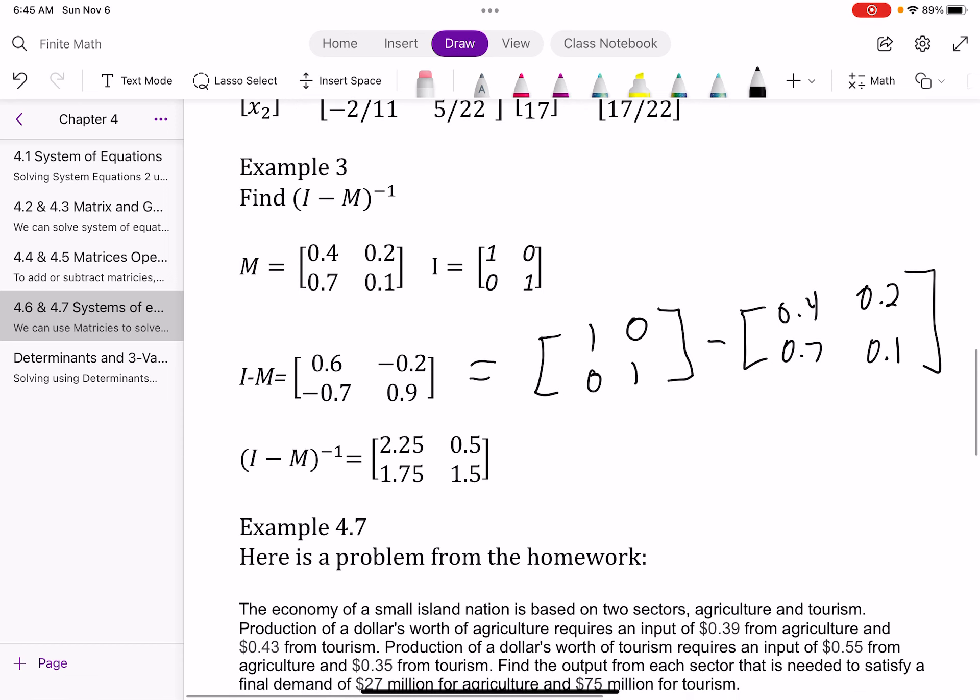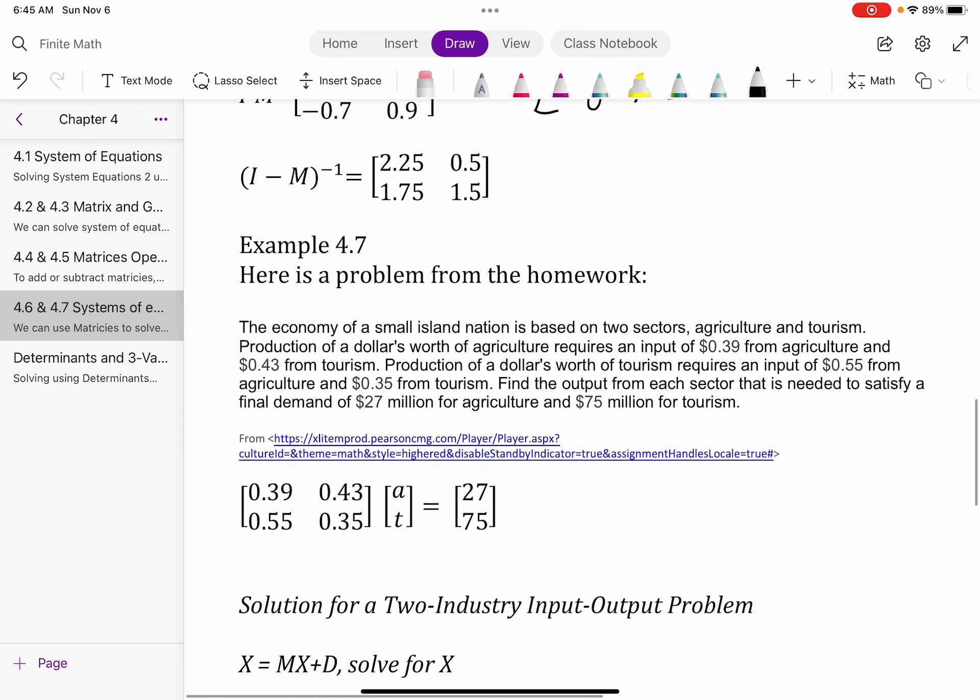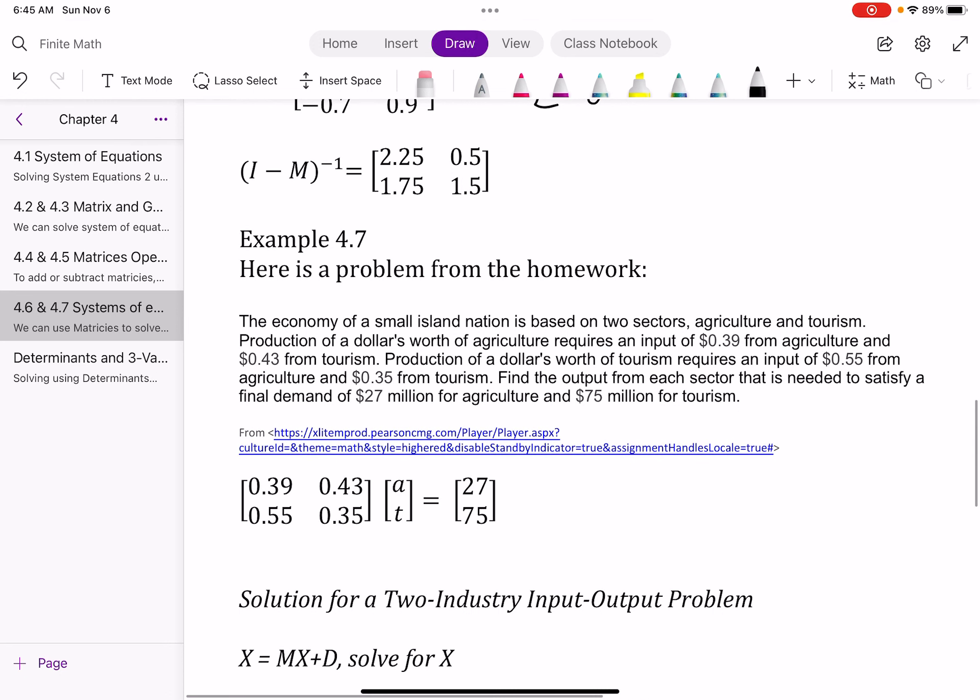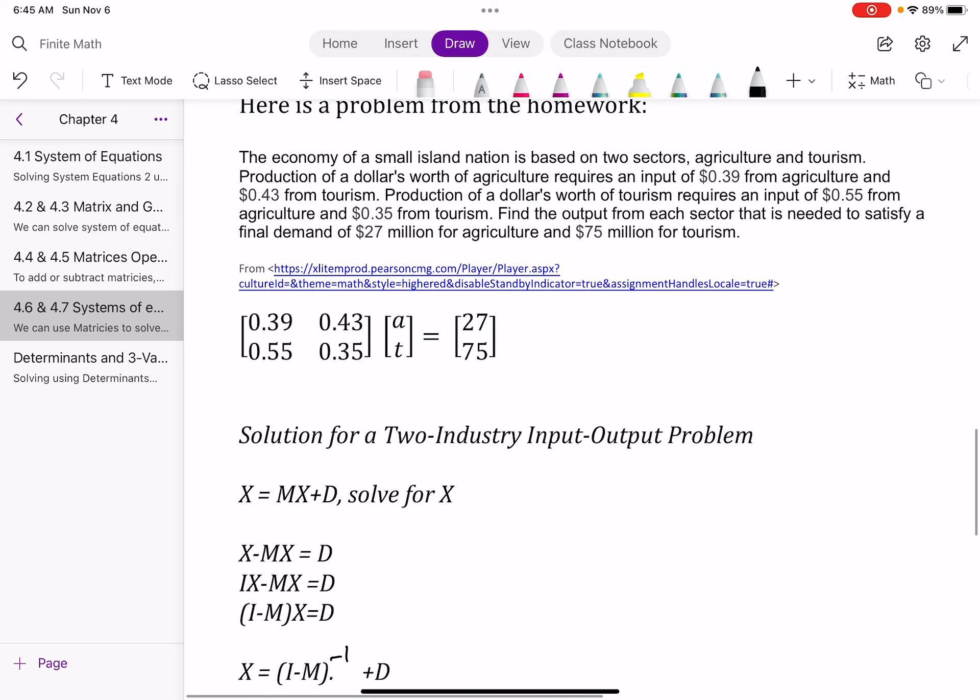Then I find my inverse. So this is one of the problems in 4.7 that was strictly out of the book. And so we'll come back to this here in a second. But let's talk about how we find a solution to what we call a two-industry output.